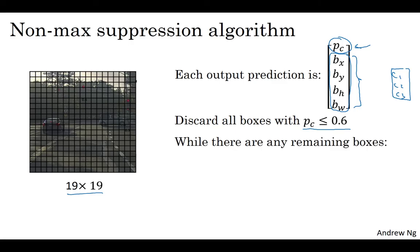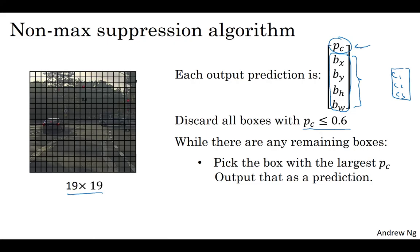Next, while there are any remaining bounding boxes that you've not yet discarded or processed, you're going to repeatedly pick the box of the highest probability, with the highest PC, and then output that as a prediction. So this is the process on the previous slide of taking one of the bounding boxes and making it lighter in color. So you commit to outputting that as a prediction for that there's a car there.